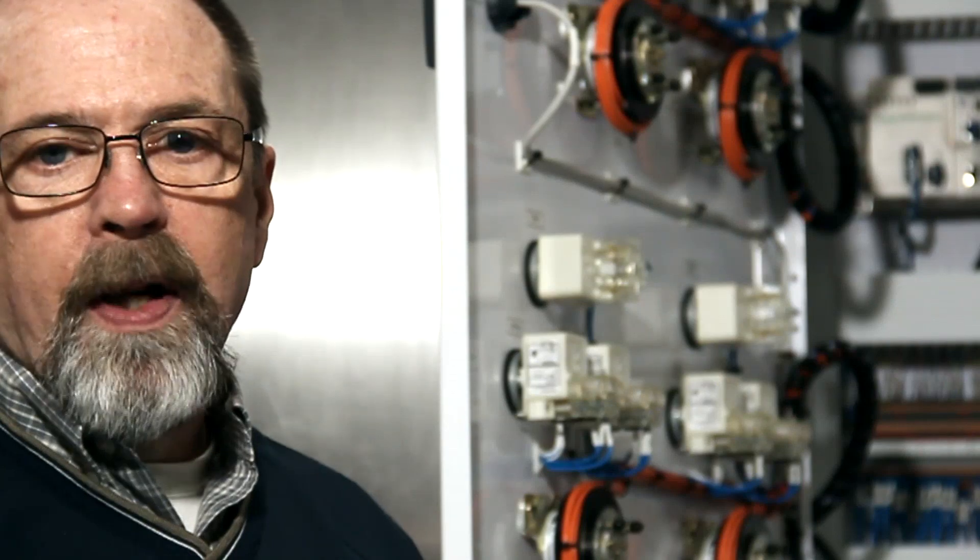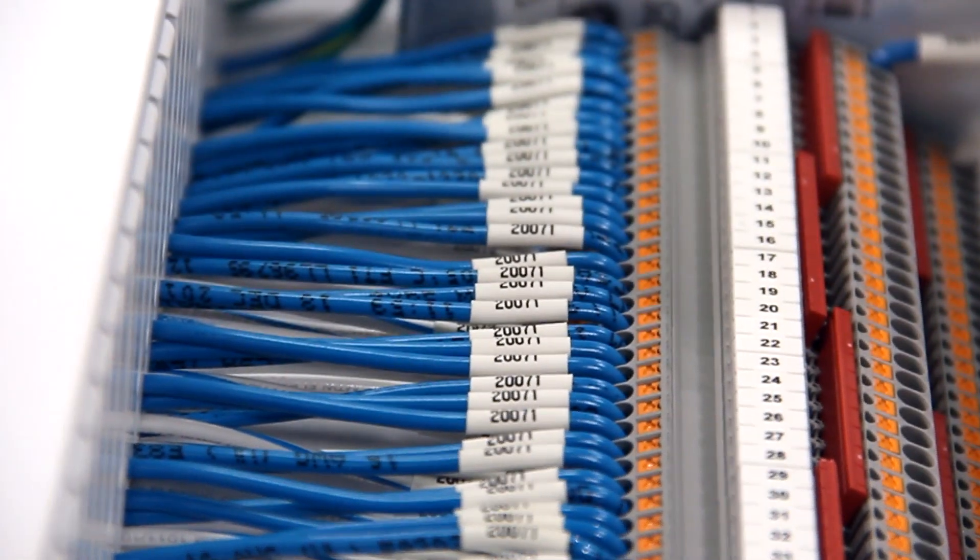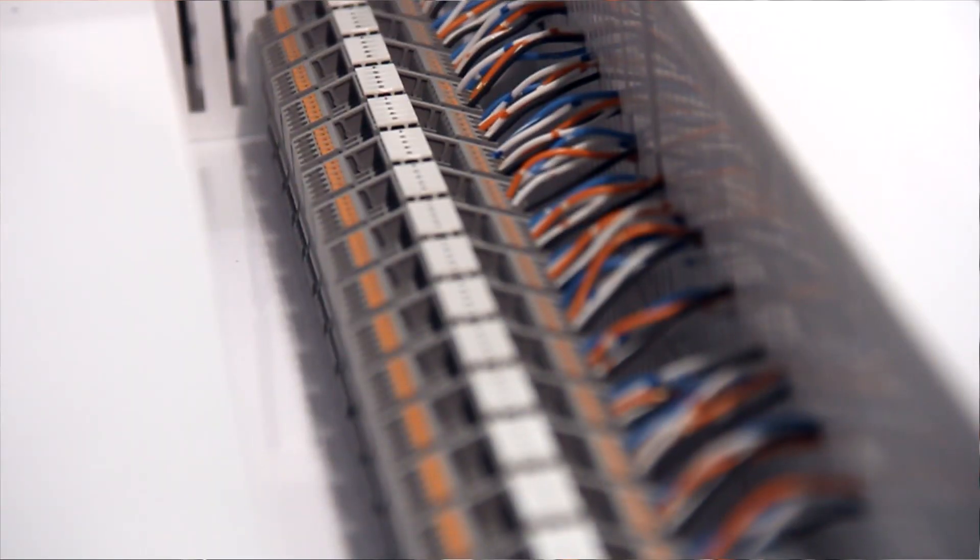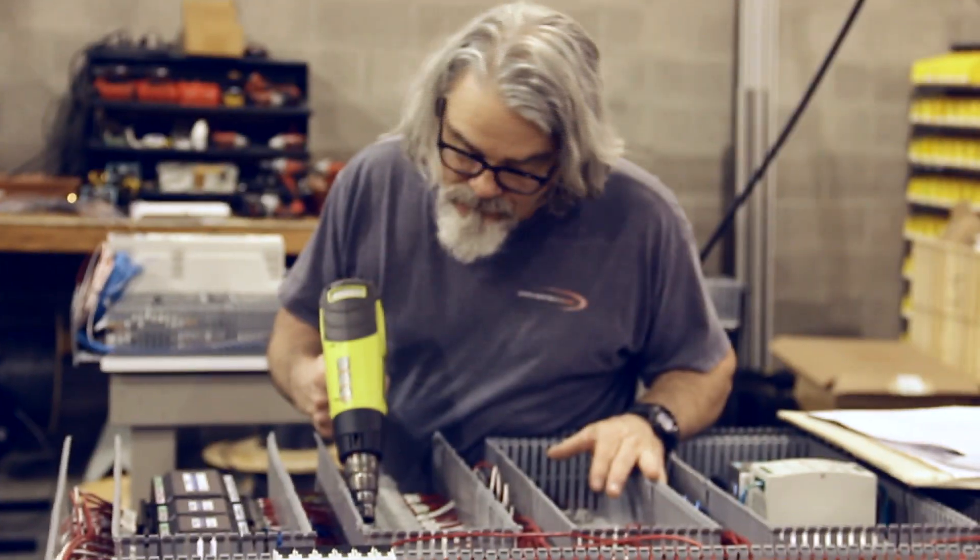Regardless of the size or complexity of the panel, the same attention to detail is applied in every instance. The devices are labeled and orderly. All the wires are routed cleanly and neatly. Thermal transfer heat shrink labels are used on the end of every conductor.